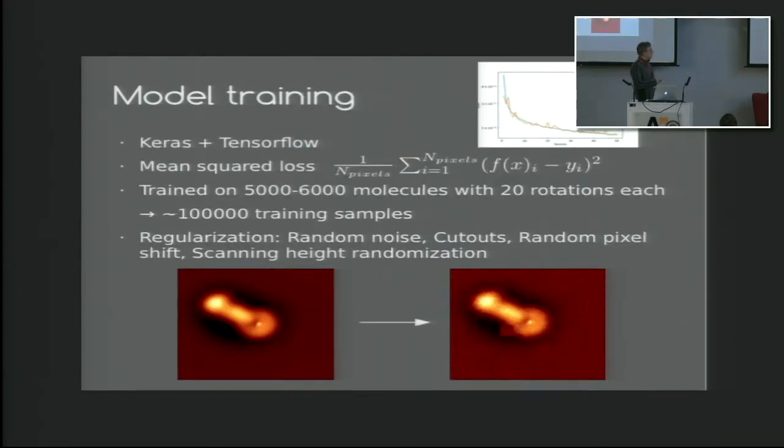We implement the model with Keras with TensorFlow backend. The objective function is a mean squared loss calculated over all the pixels of the output map. We train the model on about 5,000 to 6,000 molecules with 20 rotations for each, which gives us about 100,000 training examples. And we use several kinds of regularization on the input AFM images: random noise and some cutouts, some random pixel shifts of the delta F map, and randomizing the scanning height.